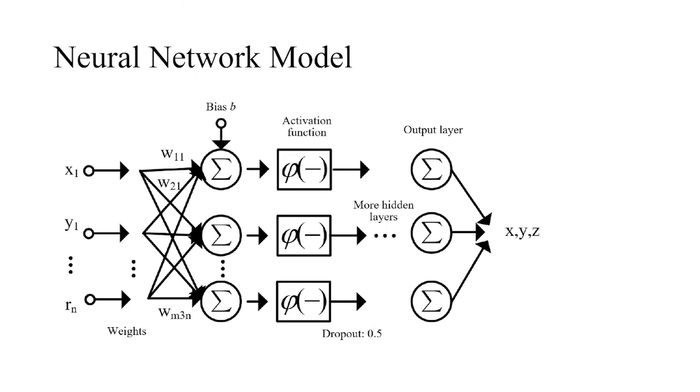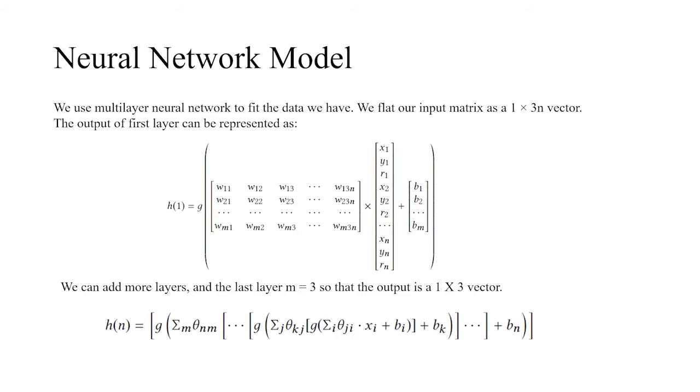The next model we want to use is a neural network model. As we can see here, we can flatten the input as x1, y1, r1, until rn. Those will be multiplied by the weight matrix and finally get to the output layer to generate the output XYZ. Here are the details for the neural network model. The weight matrix is here, multiplied by x1, y1, until rn the input, plus the bias. Here is the first layer. We can add more layers as we can see from the second formula.